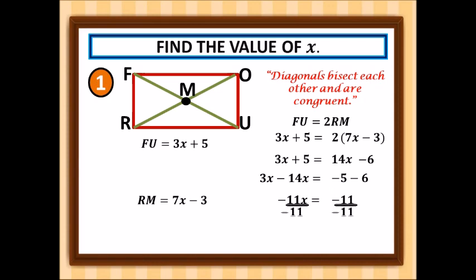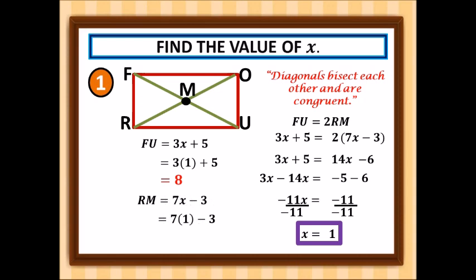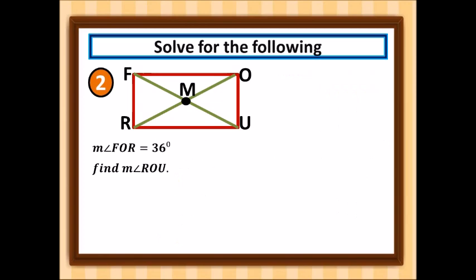Dividing both sides by −11 gives x = 1. Substituting back: FU = 3(1) + 5 = 8, and RM = 7(1) − 3 = 4. From M to O is also 4, so RO = 8, confirming FU equals twice RM. Therefore FU and RO are also congruent, as expected.